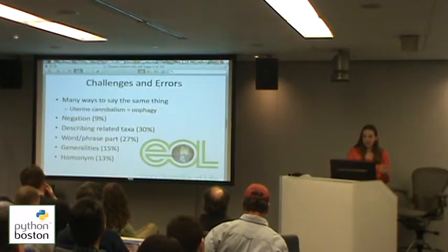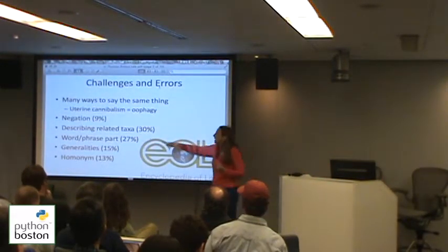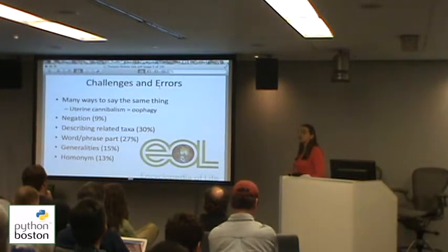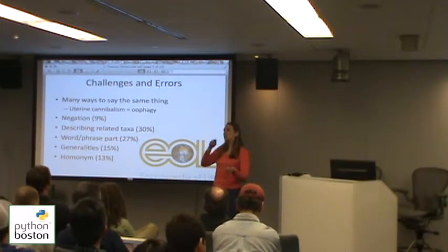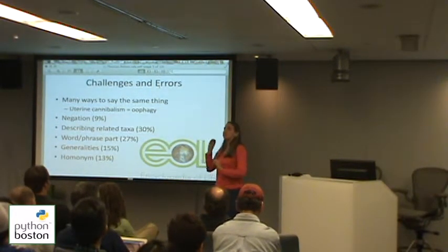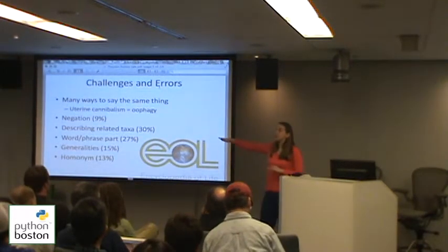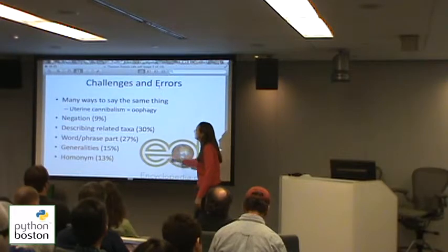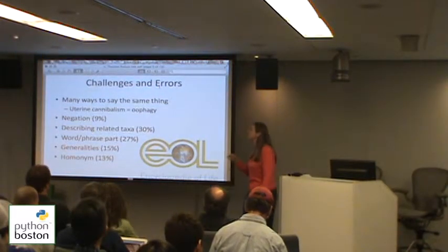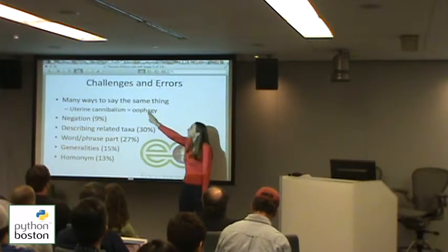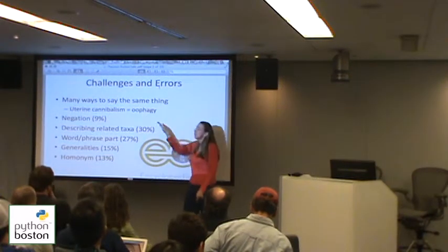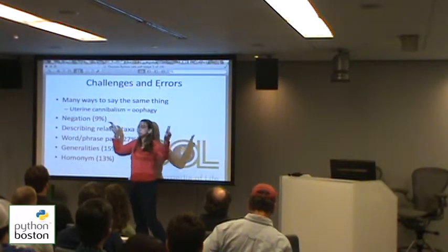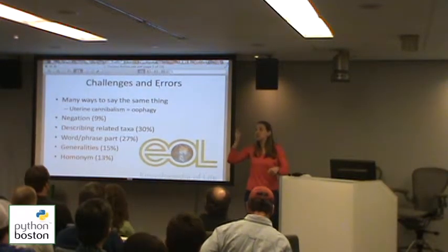Our biggest problem is terms on a taxon page that are describing related taxa. Going back to the shark example, there might be a sentence saying that a shark has to approach a dolphin in a certain way to avoid their echolocation — so the shark gets tagged with echolocation, even though the shark does not have echolocation. One strength of this method is the way we can cope with many ways to say the same thing. Instead of just searching for oophagy and assigning the URI for oophagy, I can say uterine cannibalism is a phrase, and if you see that phrase, you should attach the URI for oophagy.